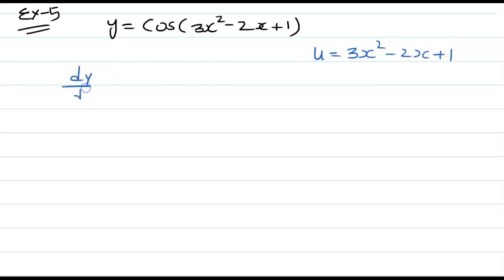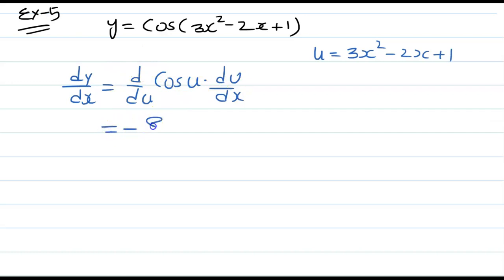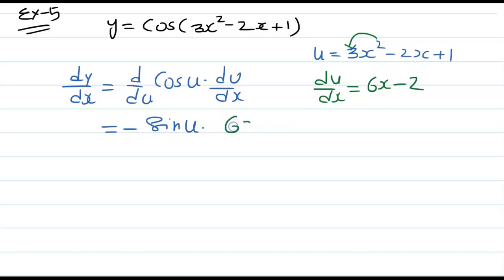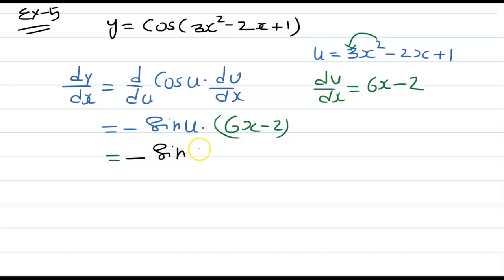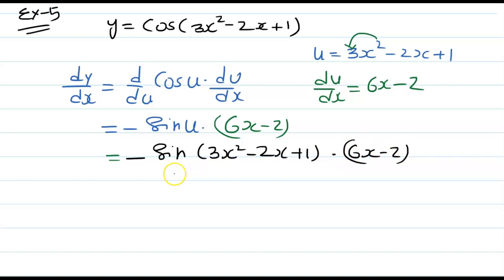So dy over dx can be written as d over du of cos u times du over dx. The derivative of cos u with respect to u is minus sin u. For du over dx, differentiating 3x squared minus 2x plus 1 gives 6x minus 2. So du over dx equals 6x minus 2. Putting values back, the final answer is minus sin(3x squared minus 2x plus 1) times (6x minus 2).